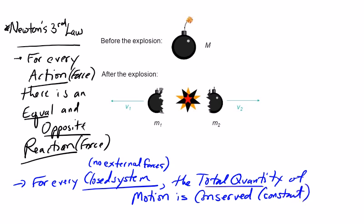A couple of key things: the total quantity and then the word 'motion.' What does he mean by motion? The concept of momentum was originally described as motion by Newton. So when he says motion, he really means momentum. So motion is really a fancy way of saying momentum, and therefore what he's saying is that the total quantity of momentum is conserved — momentum conservation.